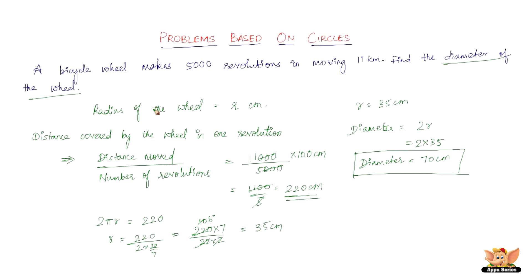Let me summarize this problem. The bicycle wheel makes 5,000 revolutions in moving 11 kilometers. The key thing to remember is that the distance covered by the wheel in one revolution is equal to its circumference. So we find the circumference using distance moved divided by number of revolutions, then use the circumference formula to find the radius, and double it to get the diameter.